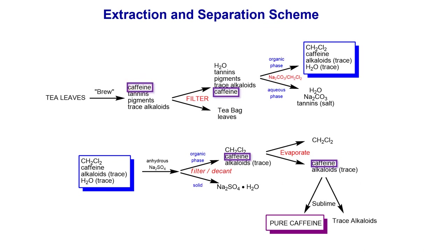To extract caffeine from tea solution, there are several steps involved. There are a lot of extraction and separation steps, so don't get overwhelmed — we're going to look at it one step at a time. Let's focus on the top half of the separation scheme. We start with tea leaves, brew them in hot water, and once brewed we get a tea solution.